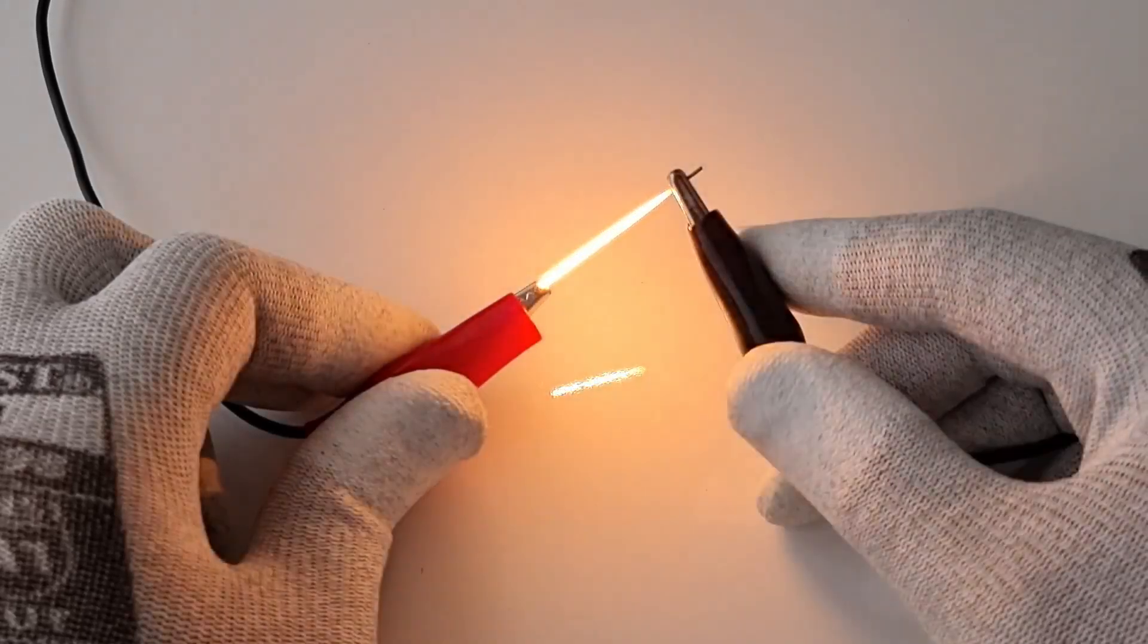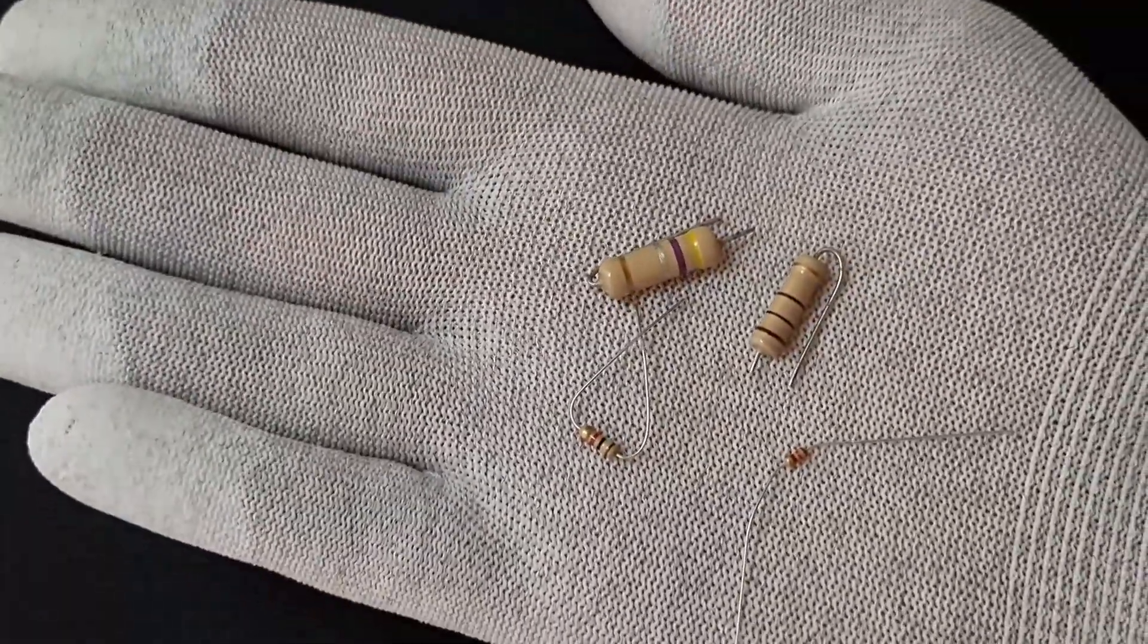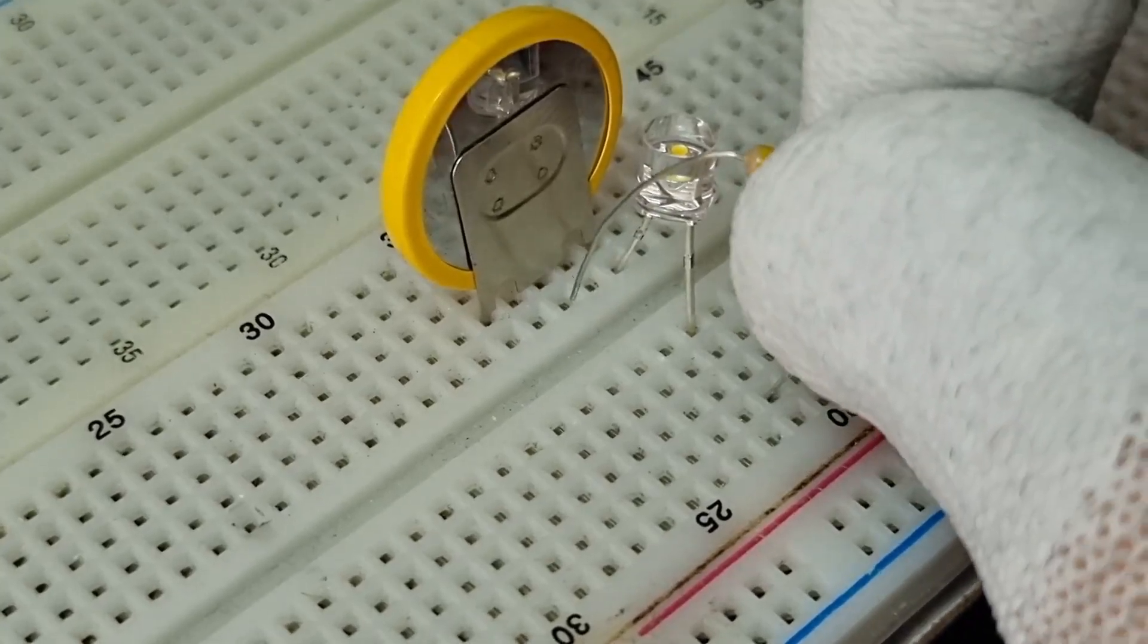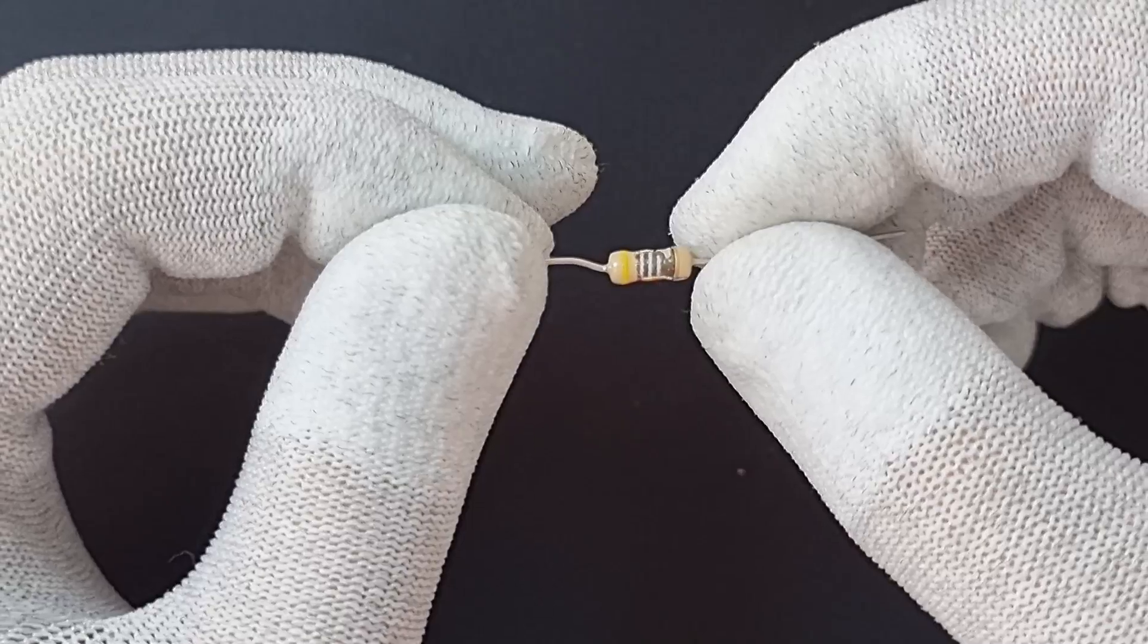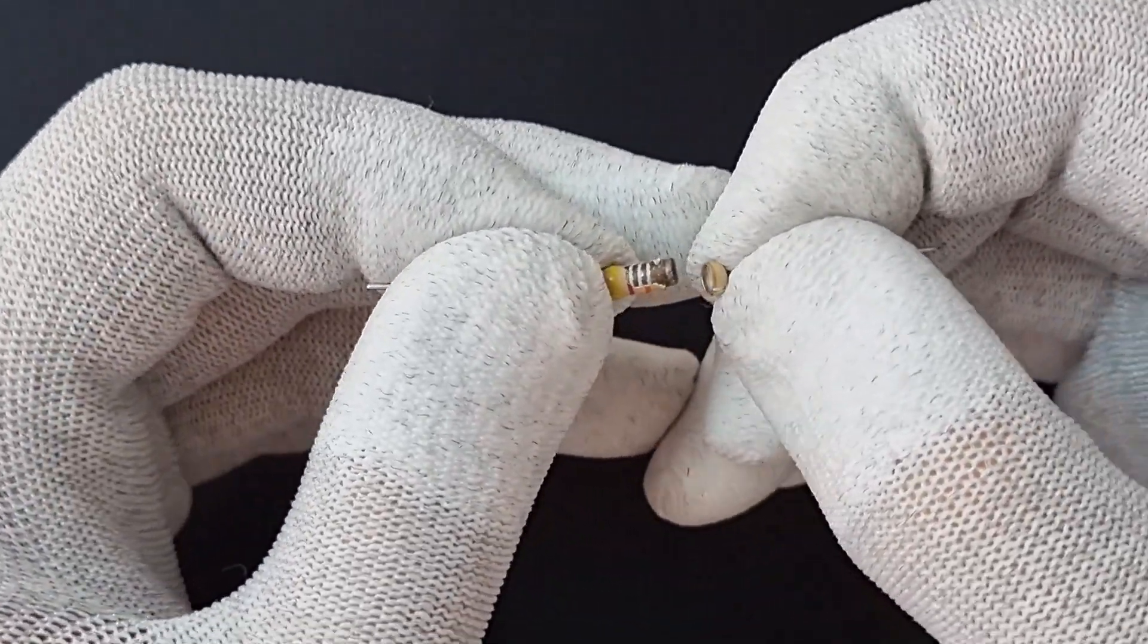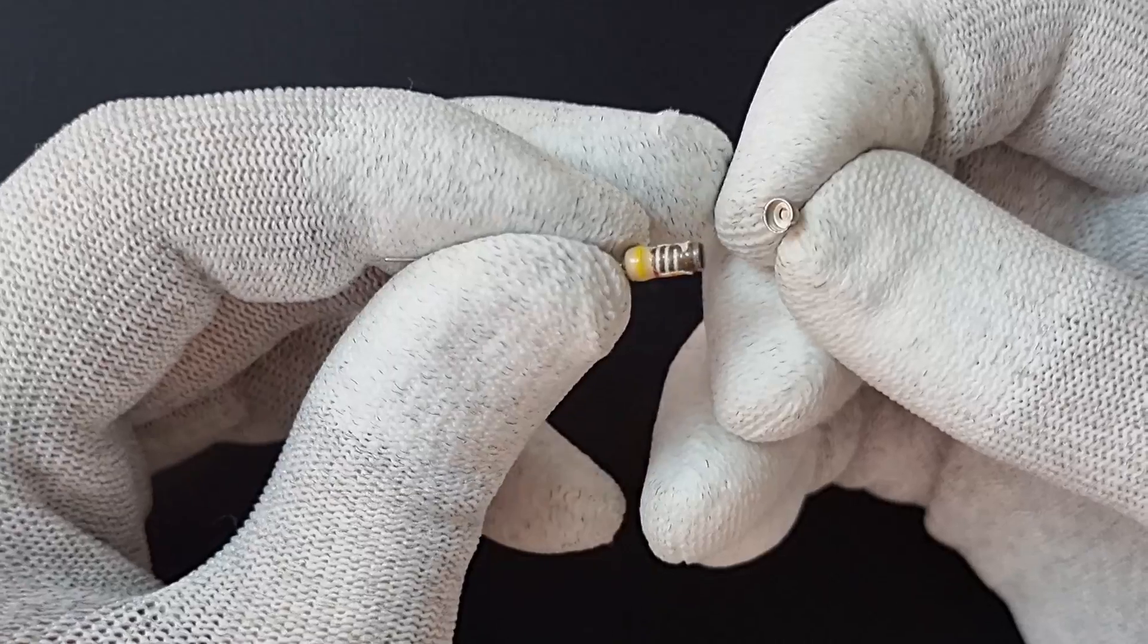The second type is the carbon film resistor, which is commonly used for prototyping. This type is made from a carbon film deposited on a ceramic core. The resistance is determined by the thickness and length of the carbon film.